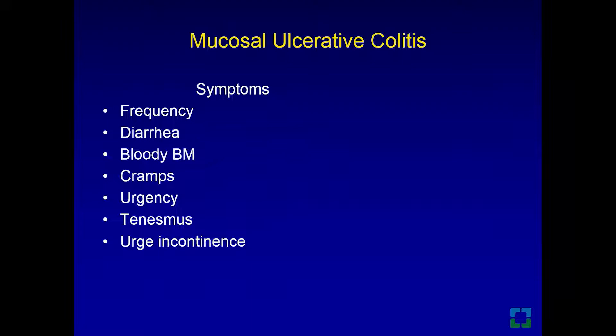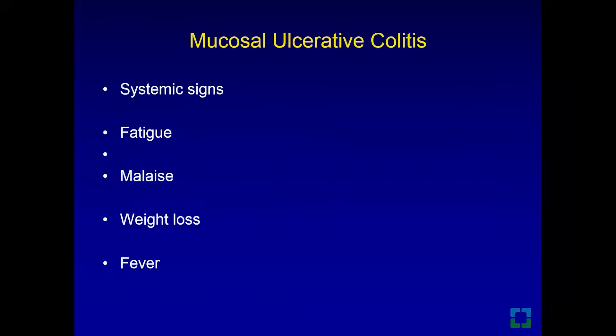The symptoms of ulcerative colitis include increased bowel movement frequency, loose bowel movements, sometimes bloody diarrhea, cramps, urgency, tenesmus, and urge incontinence. These patients will always know where the bathrooms are, wherever they work or go. Systemic signs include fatigue, malaise, weight loss, and fever due to the underlying inflammatory condition.